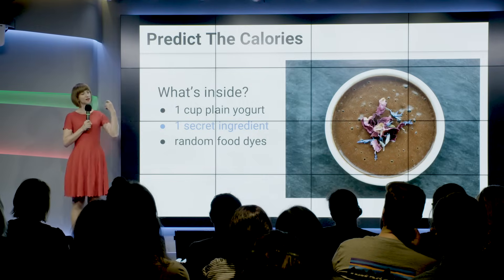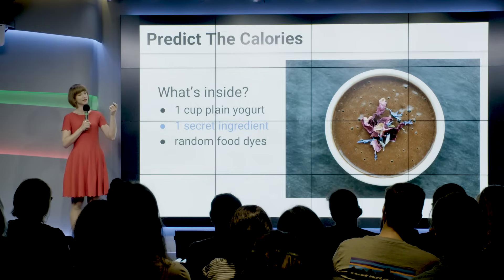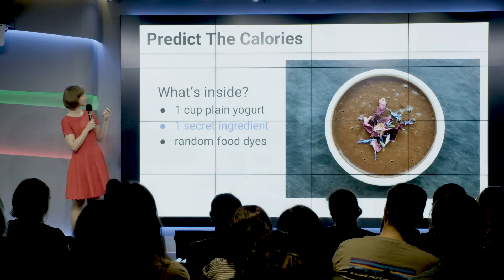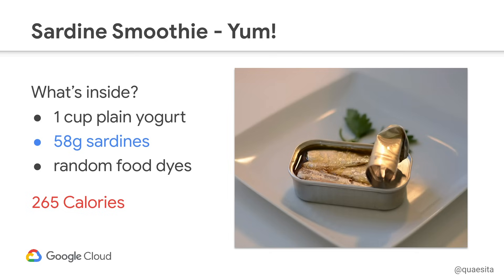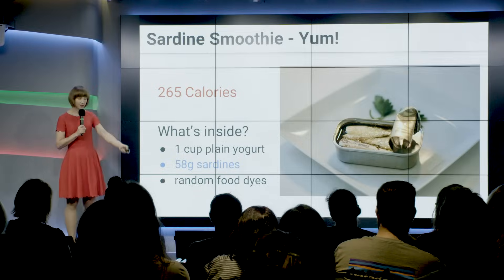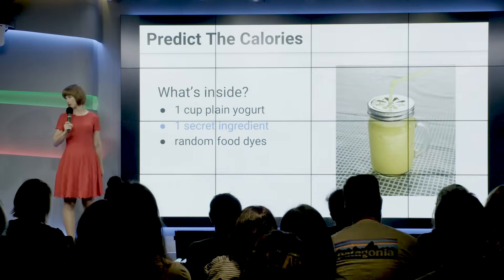Those of you who were brave enough to just go for it even though you didn't know the right answer — that was what's going to get me to move to the next slide and give you more information, and we'll be able to iterate towards correct together. You've unlocked the next slide. Turns out the secret ingredient was 58 delicious grams of sardines, with 265 calories in there. I see you don't want to drink it — fine, I'll make you a different one.